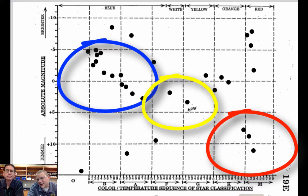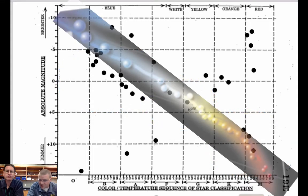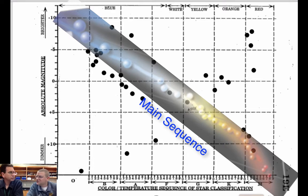So everything right down the middle of this page here is stars like the Sun but on different temperature scales. And so we call that the main sequence. Those are the main type of stars in the sequence of life cycle that we'll learn later.